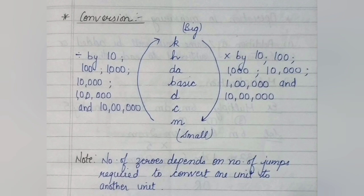The biggest unit out of all these is kilo and the smallest unit is milli. As we move from big to small, up to down, we need to multiply by ten, hundred, thousand and many more. The number of zeros depends on number of jumps required to convert one unit to another unit. If we move from smaller unit to a bigger unit, we need to divide by ten, hundred, thousand or many more numbers according to number of jumps required.